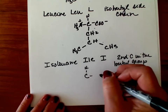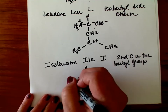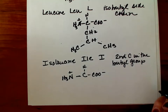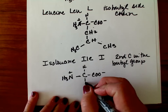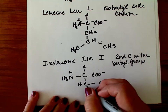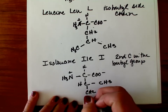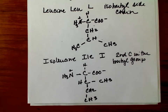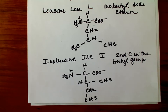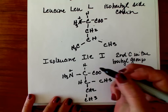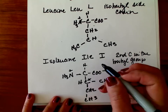Alpha carbon, alpha carboxyl, alpha amino — this is isoleucine. Now this is the first amino acid that has two chiral carbons. So not only is our alpha carbon chiral, but this carbon is also chiral.